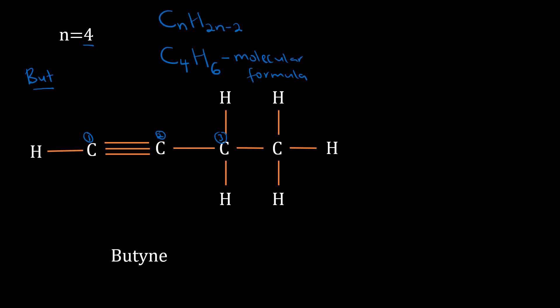For all hydrocarbons with n equal to four we use the prefix 'but-', so the name for this alkyne becomes butyne, with the '-yne' ending. For the condensed structural formula, we write HC≡C-CH₂-CH₃. Carbon atom three has two hydrogen atoms (CH₂) and carbon atom four has three hydrogen atoms (CH₃). This is our condensed structural formula for butyne.